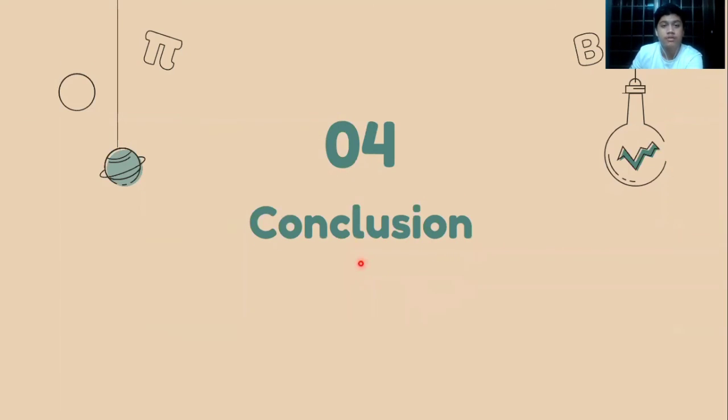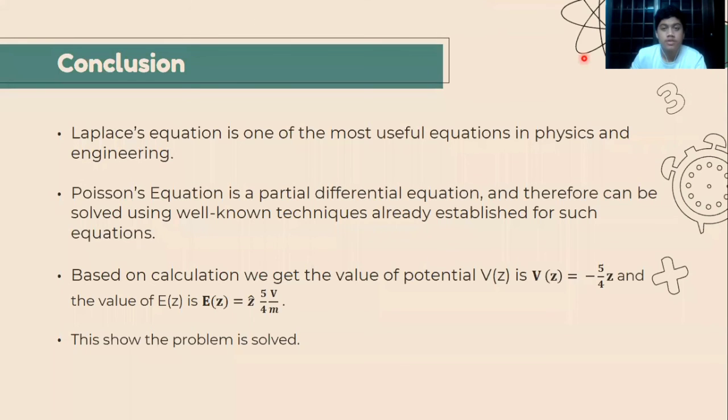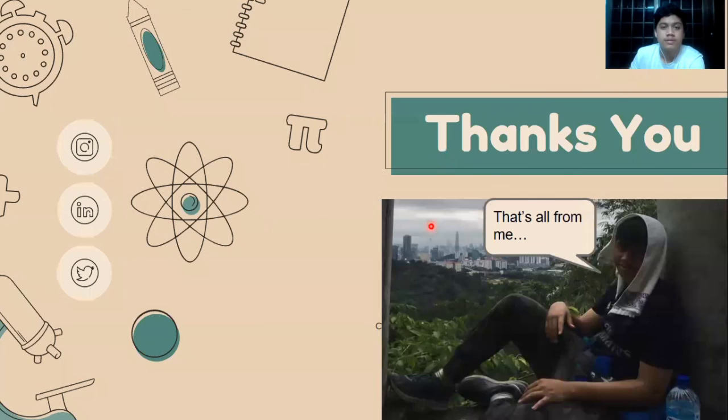For the conclusion, Laplace's equation is one of the most useful equations in physics and engineering. Based on calculation, we get the value of potential V(z) = -5z/4, and the value of electric field E(z) = ẑ(5/4) volts per meter. That's all from me, thank you.